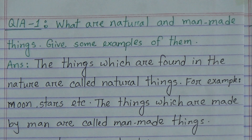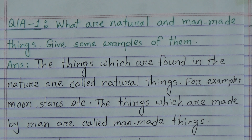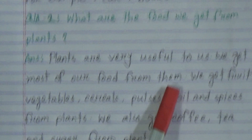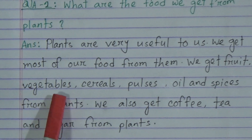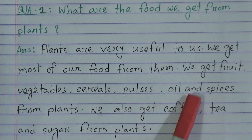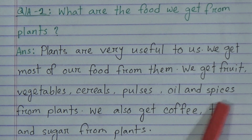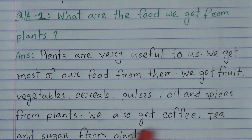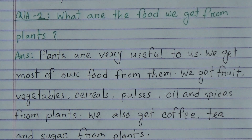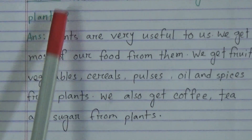Question answer number two: What are the foods we get from plants? Answer: Plants are very useful to us. We get most of our food from them. We get fruits, vegetables, cereals, pulses, oil and spices from plants. We also get coffee, tea and sugar from plants.